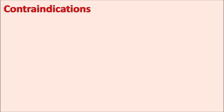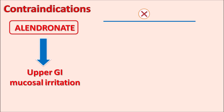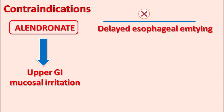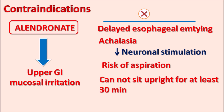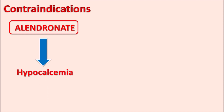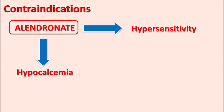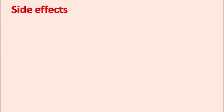Alendronate is contraindicated in esophageal disorders such as delayed esophageal emptying and achalasia, decreased neuronal stimulation to the esophagus, and in patients at risk of aspiration — as it can further increase esophageal reflux. It is also contraindicated in patients who cannot sit upright for at least 30 minutes, as it increases the risk of esophageal ulceration and reflux. Additionally, it is contraindicated in patients with hypocalcemia and in those who may develop hypersensitivity reactions.